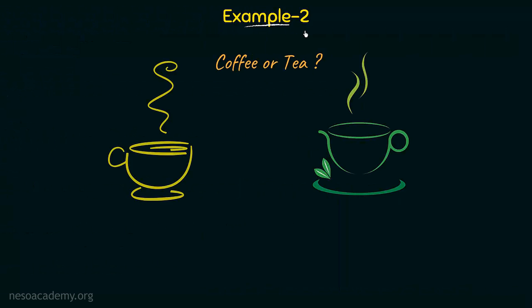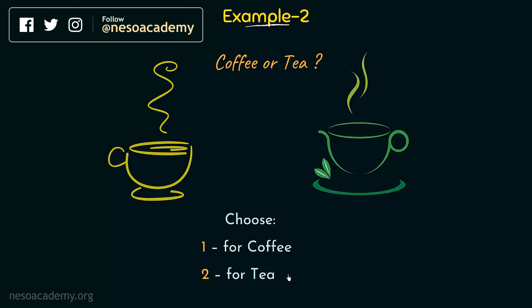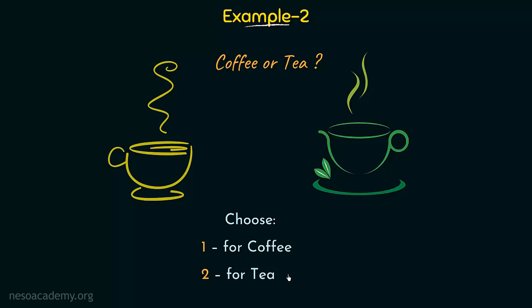Let's take one more example using the else if statement — a program for a restaurant. We want the user to select either coffee or tea: enter 1 for coffee and 2 for tea. If the user enters 1 they are ordering coffee; if they enter 2 they are ordering tea. But there is also the possibility they enter some other value, in which case we tell them that is a wrong option. So we need to handle three cases: choice 1, choice 2, and an invalid option.